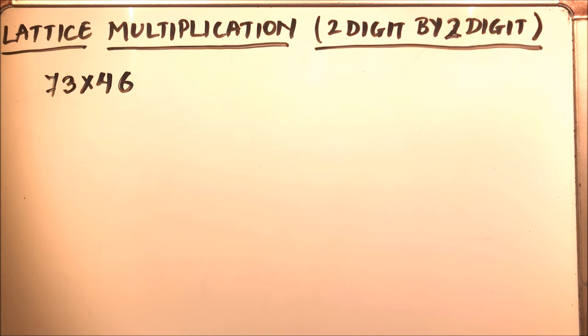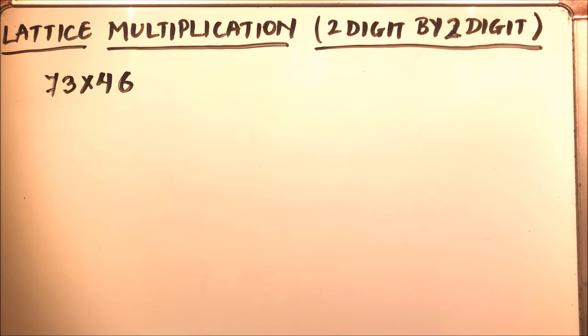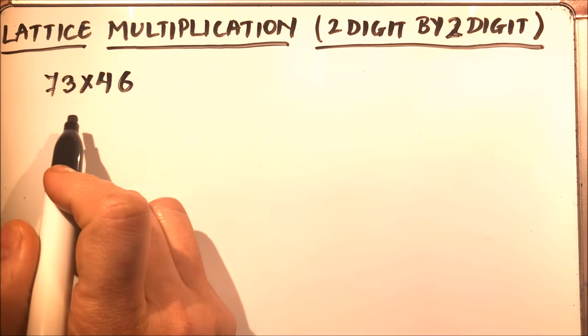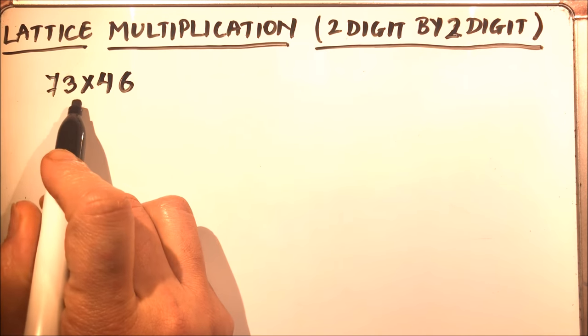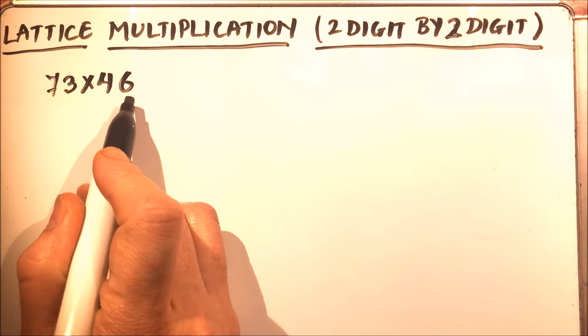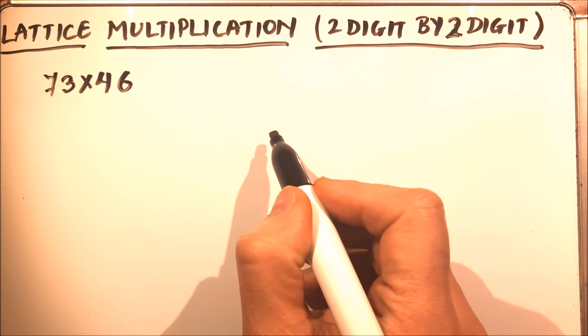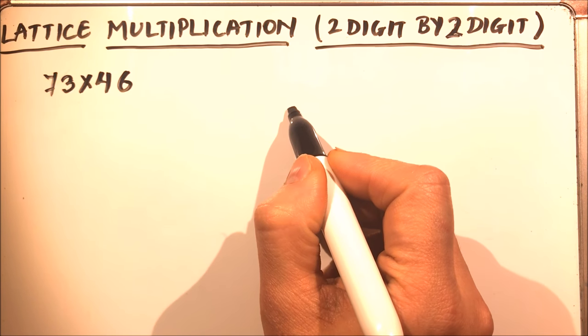Hello viewers, today we are going to learn lattice multiplication of a two-digit number by a two-digit number. Let's get started — let's have an example: 73 times 46.